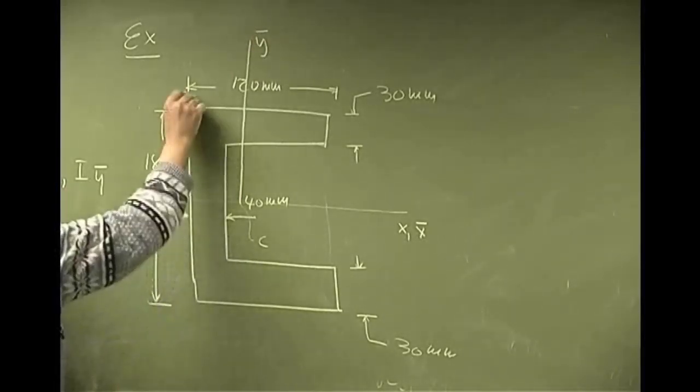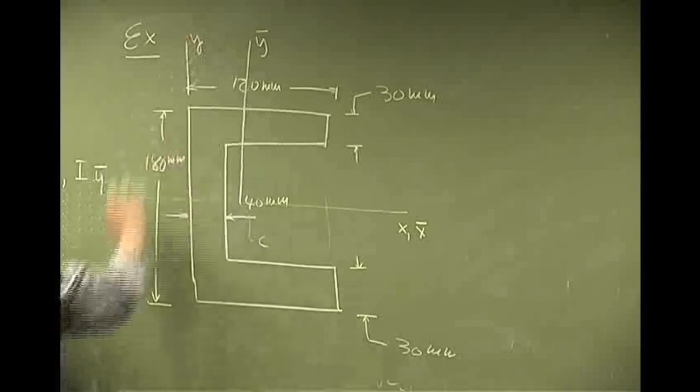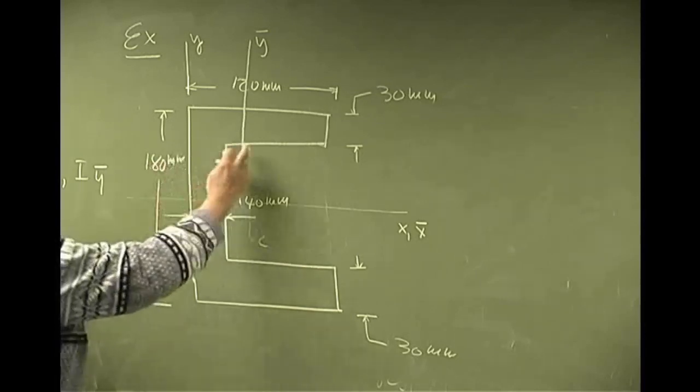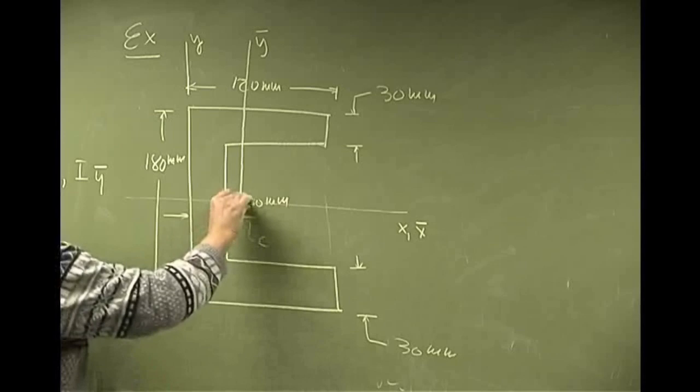And if you place another axis here, we call this as y. So for this problem, because of symmetry, the x-axis and the x-bar axis, they will coincide. But the y-axis and the y-bar axis will not coincide.